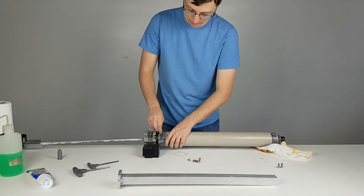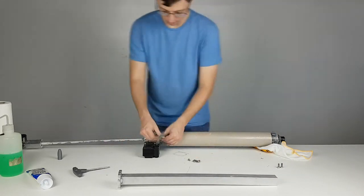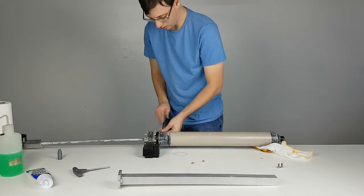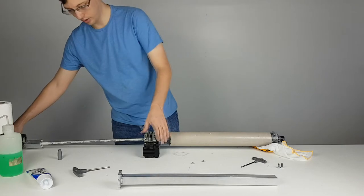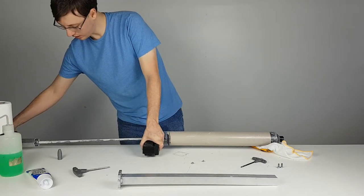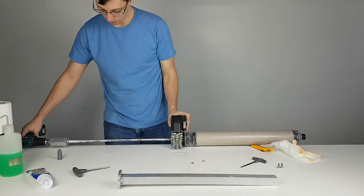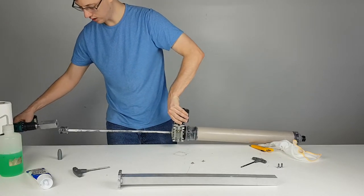We are now going to reattach the tube to the gearbox assembly. With the tube reattached to the gearbox we should slide the anti-rotator back on to protect the acme screw from dust and debris. This step can also be done earlier.